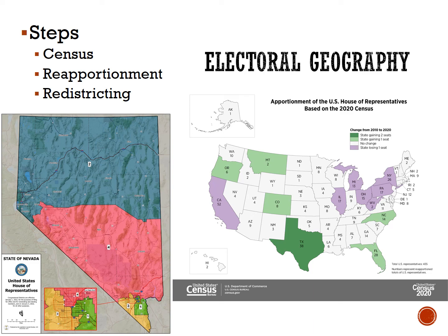Hello Human Geographers! We are back at it again this evening. We've spent a while talking about territoriality at the state or national scale, but now we're going to be looking internally within states at various subnational scales. Tonight we're going to examine electoral geography, or how geography can impact elections.